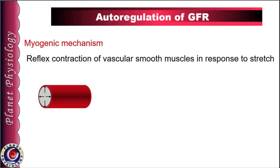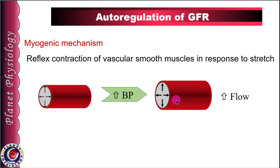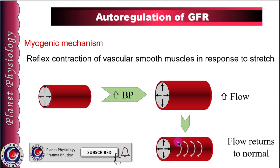Myogenic mechanism is due to the property of vascular smooth muscles to show reflex contraction in response to stretch. Increase in blood pressure causes vascular smooth muscles of the afferent arteriole to stretch, increasing diameter and blood flow. This stretch initiates reflex contraction of the smooth muscles, returning the vessel to its original diameter. This leads to return of blood flow to its original value, and by regulating renal blood flow, GFR is maintained constant despite variations in systemic blood pressure.